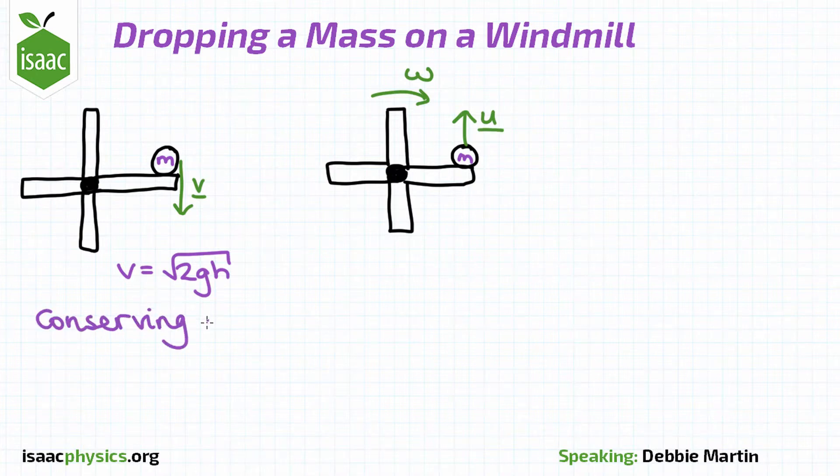We can conserve energy considering all the potential energy of the ball when it is at a height H to be converted to the angular kinetic energy of the rod and the linear kinetic energy of the ball afterwards.